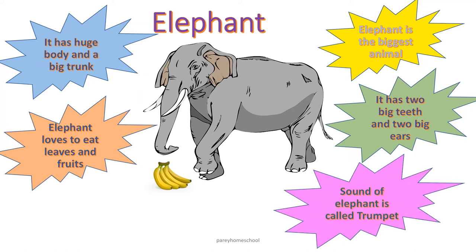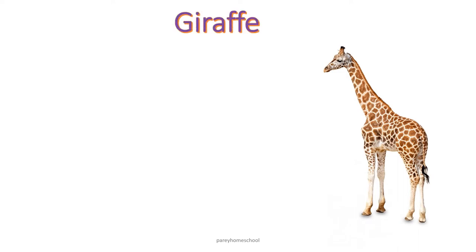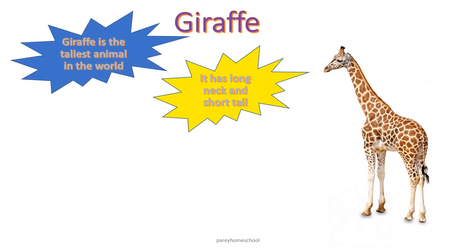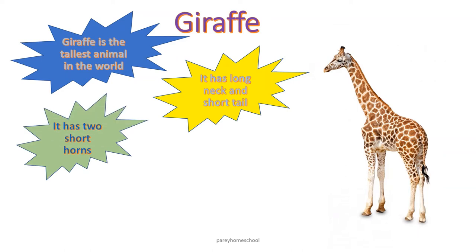The sound of elephant is called trumpet. Can you guess which animal is this? This is giraffe. Giraffe has a long neck and short tail. Giraffe is the tallest animal in the world. It has two short horns on its head.